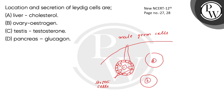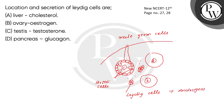Between the seminiferous tubules, we call this the interstitial space. And here you find different types of cells — the Leydig cells. Leydig cells secrete androgens, like testosterone.